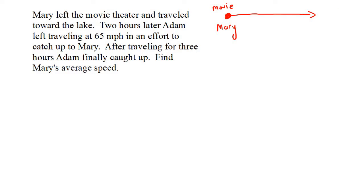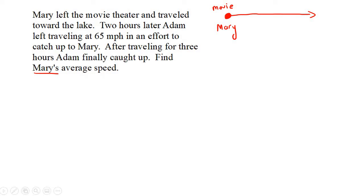The lake is actually pretty irrelevant. What happens is Mary is going to start driving — maybe her and Adam had a little argument or something. Adam just needed two hours to calm down and cool off a bit. Then he decided he actually wants to get back with Mary, and he speeds in his car at 65 miles an hour to try to catch up. After traveling for three hours, Adam finally catches up. The question is: find Mary's average speed.